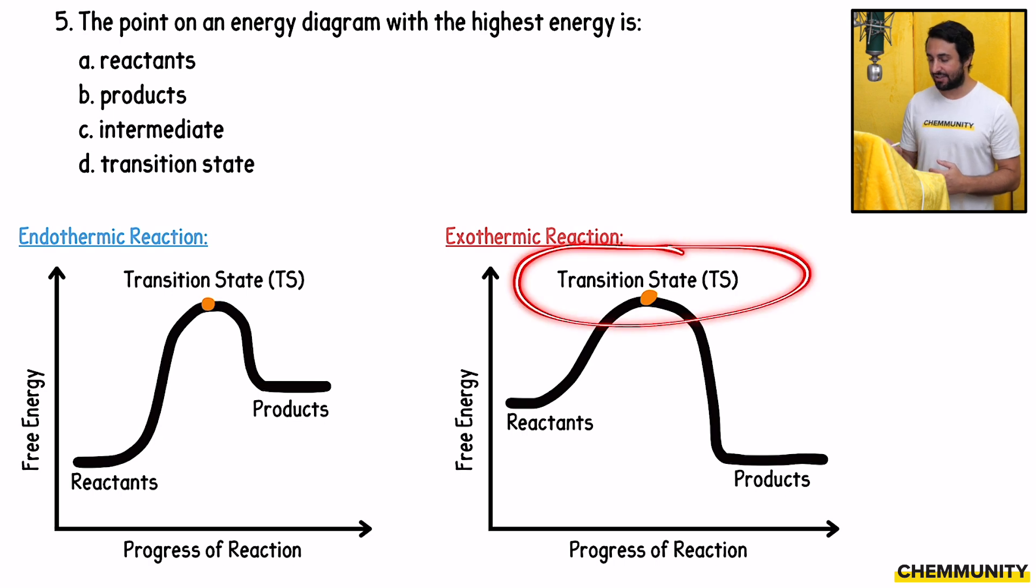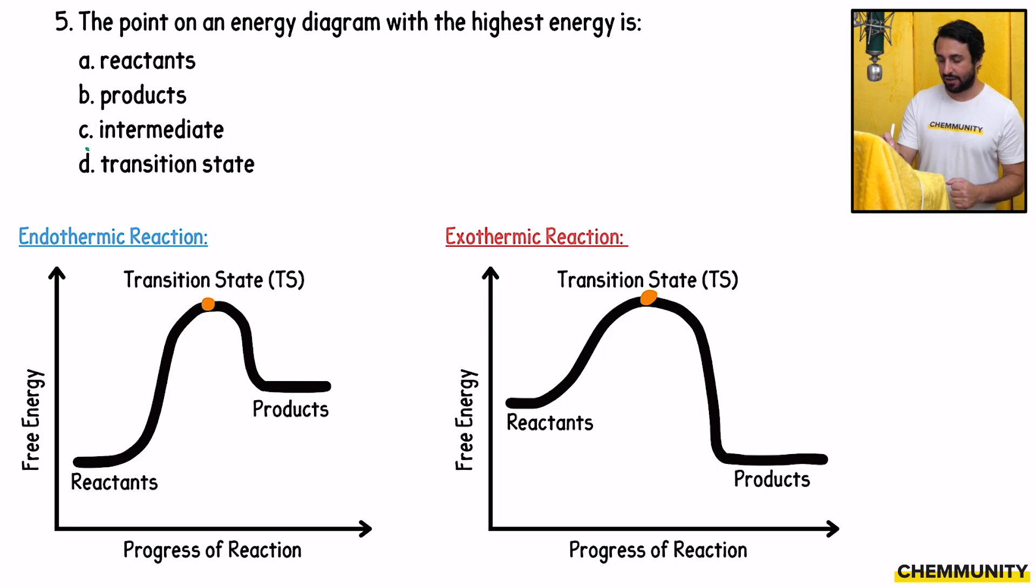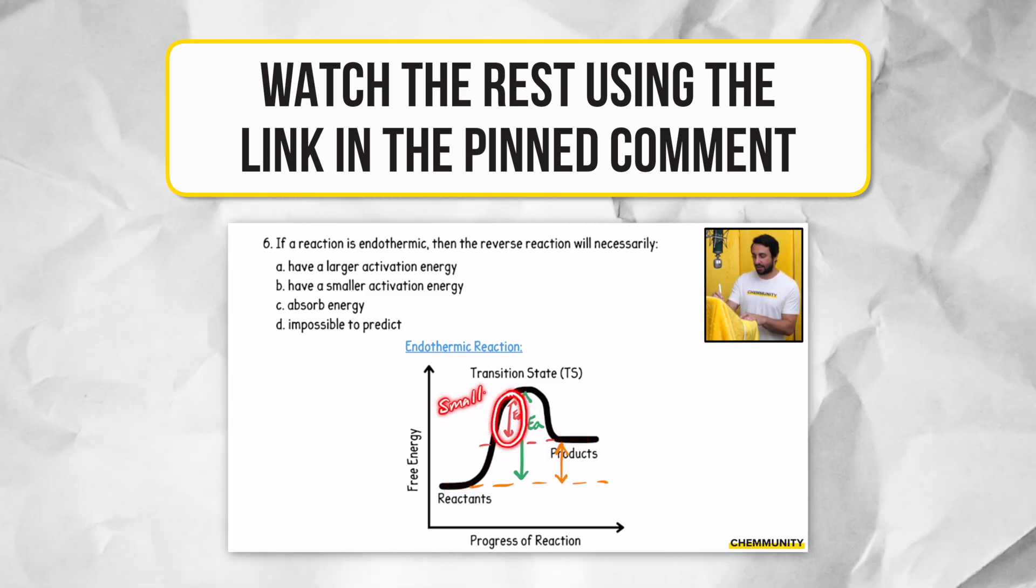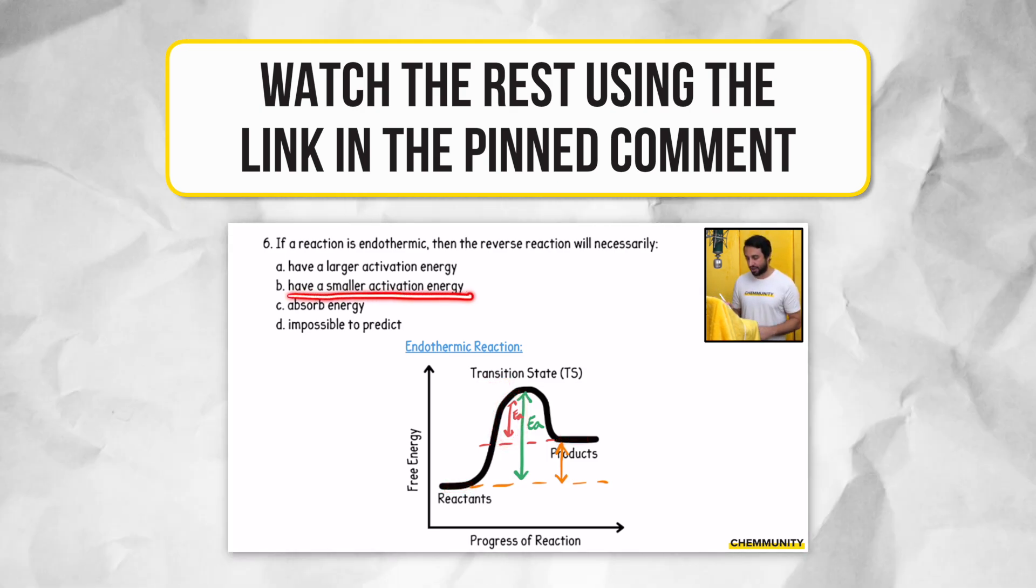It is the transition state that is definitely going to be the point on the energy diagram with the highest energy. So that will be D. Because the products sit higher than the reactants, then in the reverse direction, the activation energy necessarily has a smaller activation energy.